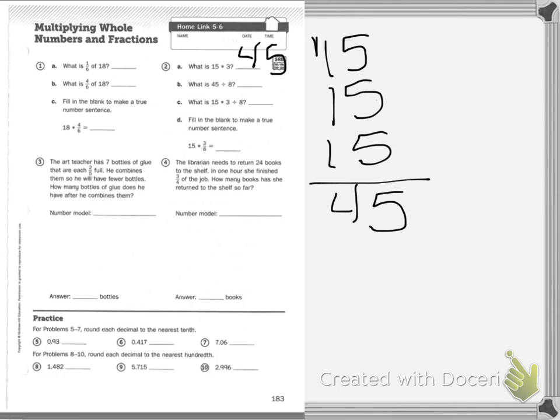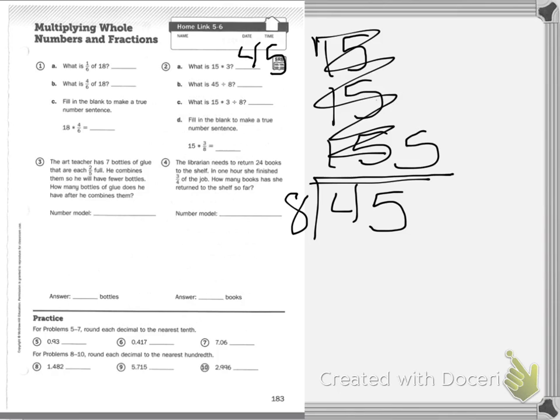Now it's asking what is 45 divided by 8? So I'm just going to switch it up here. I know 8 goes into 45, we're going to cross these out, 5 times. 5 times 8 is 40. I have 5 left over. And I can write that as a fraction. I can write it as 5/8. So my answer is 5 and 5/8.